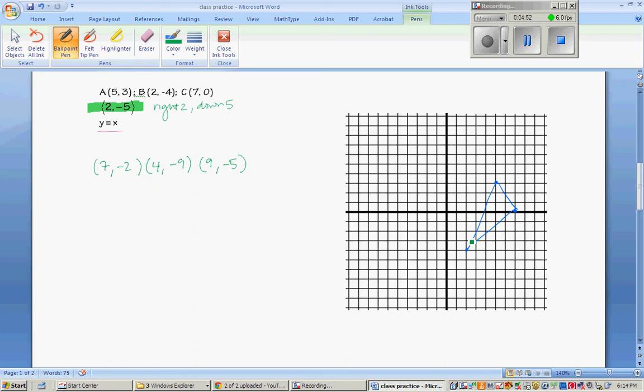When I get them graphed, 7, negative 2. Went over 2 and down 5. And 4, negative 9. Okay.